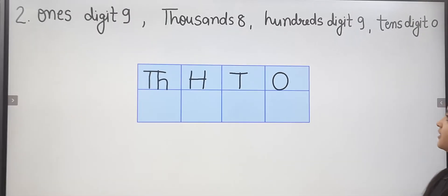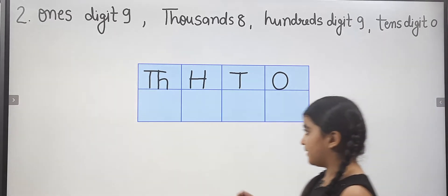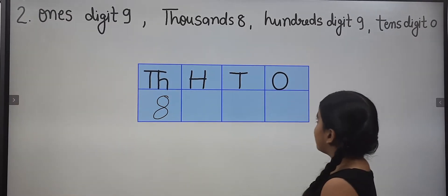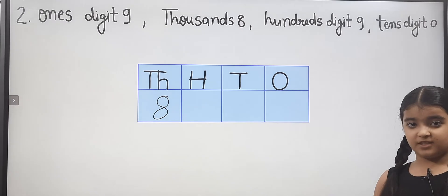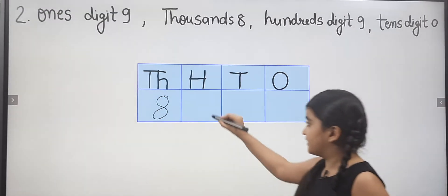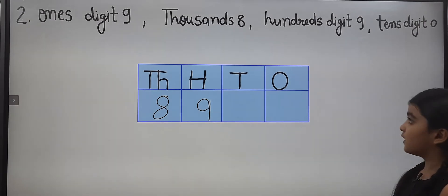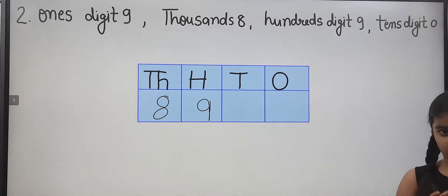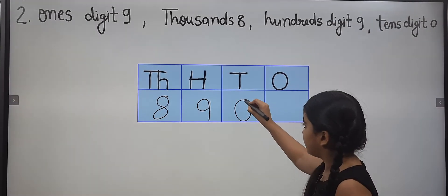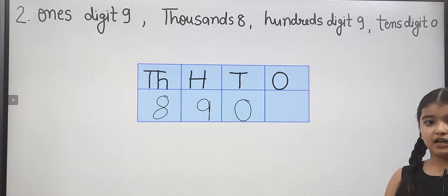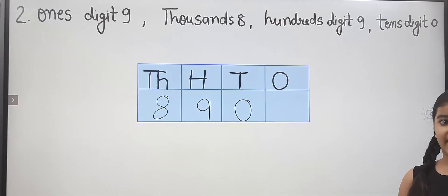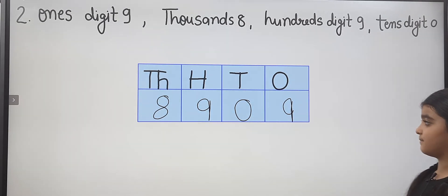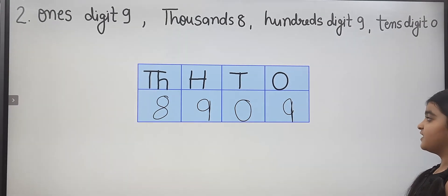Here we will write one number. Thousands is eight, so here we will write eight. Hundreds comes next and hundreds is nine, so we will write nine. Tens is zero, so here we will write zero. The last number is nine in the ones place, so here we write nine. This number is eight thousand nine hundred nine.